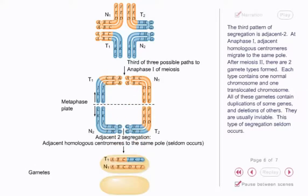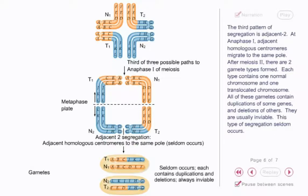Each type contains one normal chromosome and one translocated chromosome. All of these gametes contain duplications of some genes and deletions of others. They are usually inviable. This type of segregation seldom occurs.